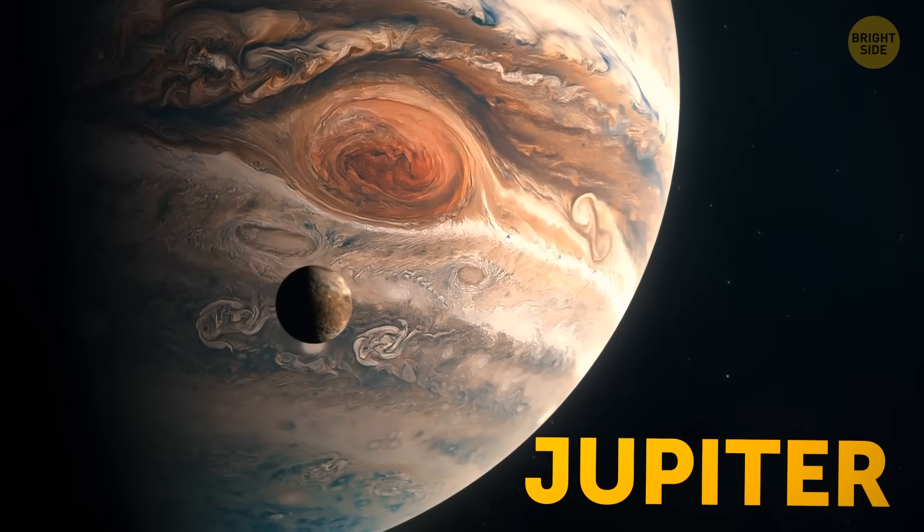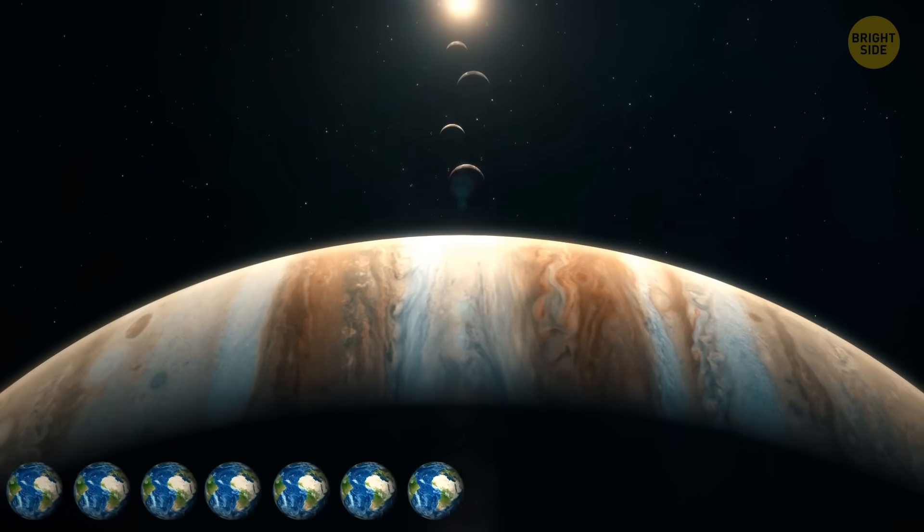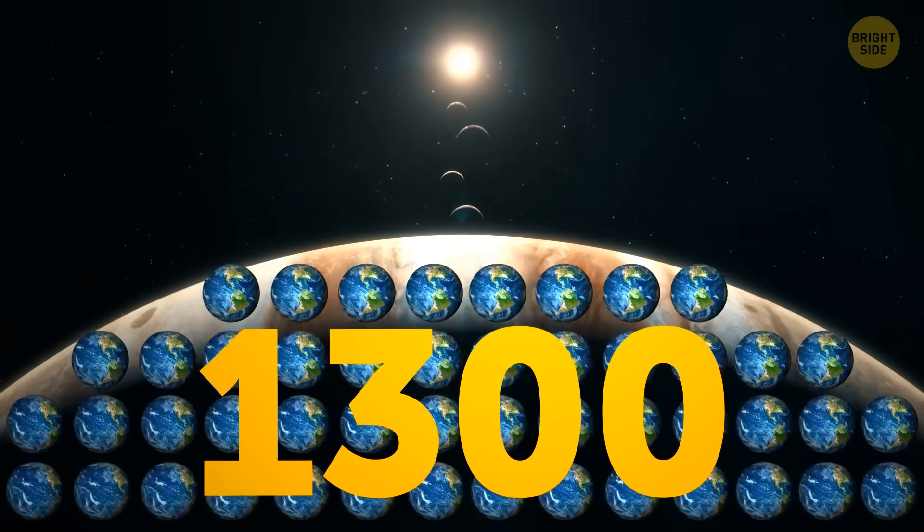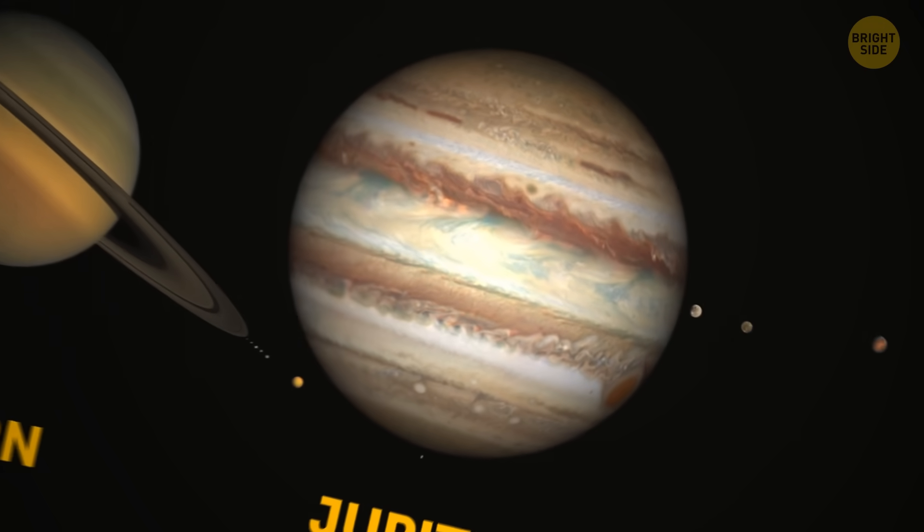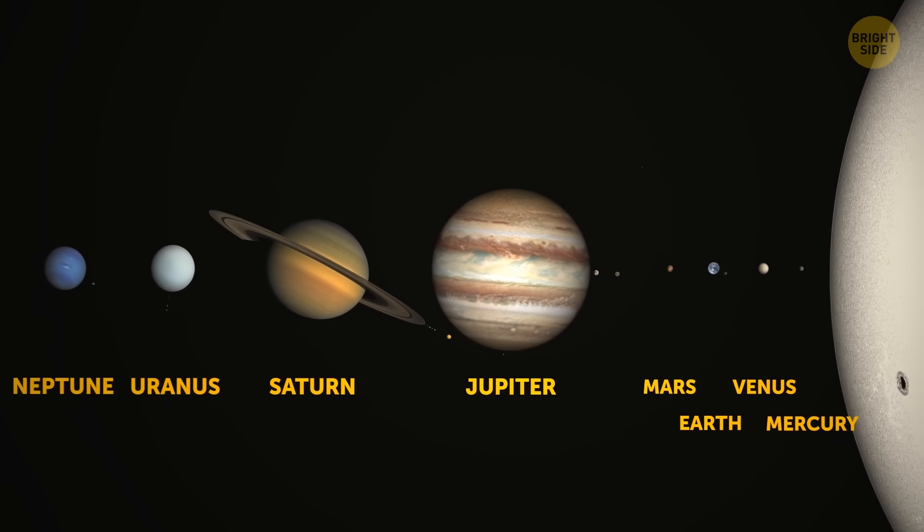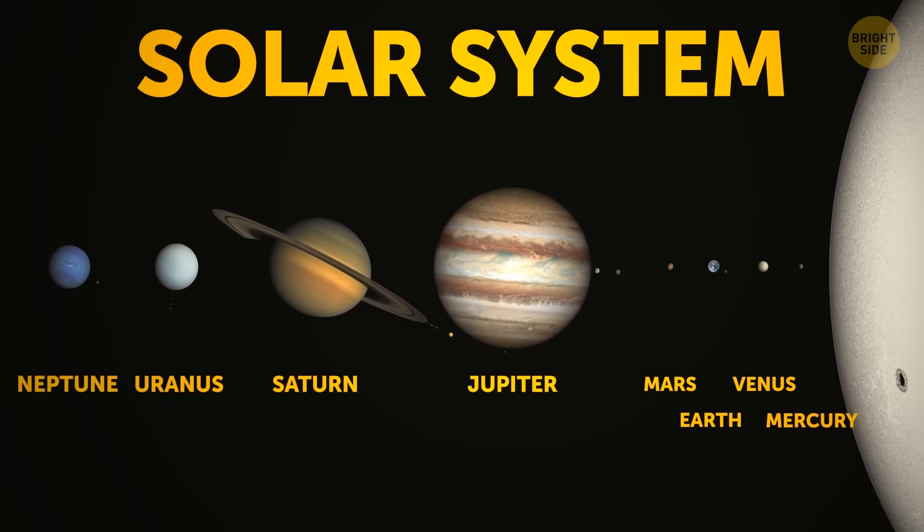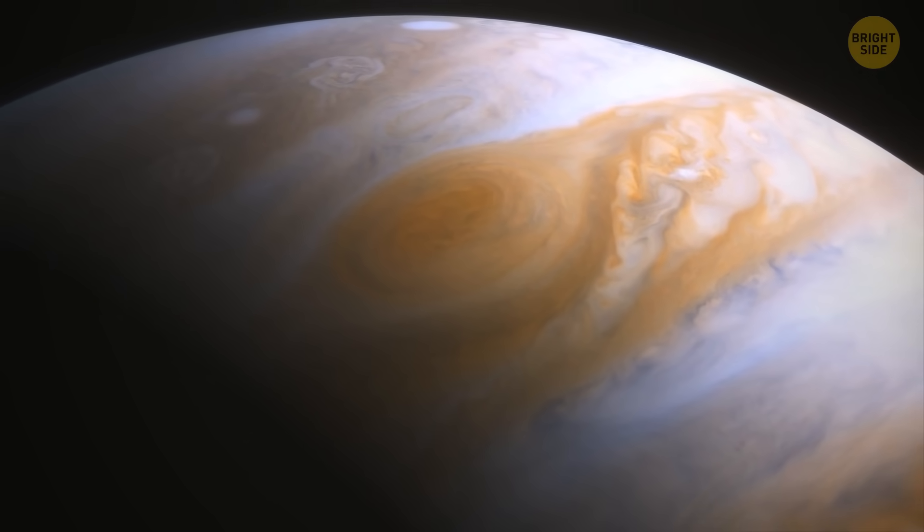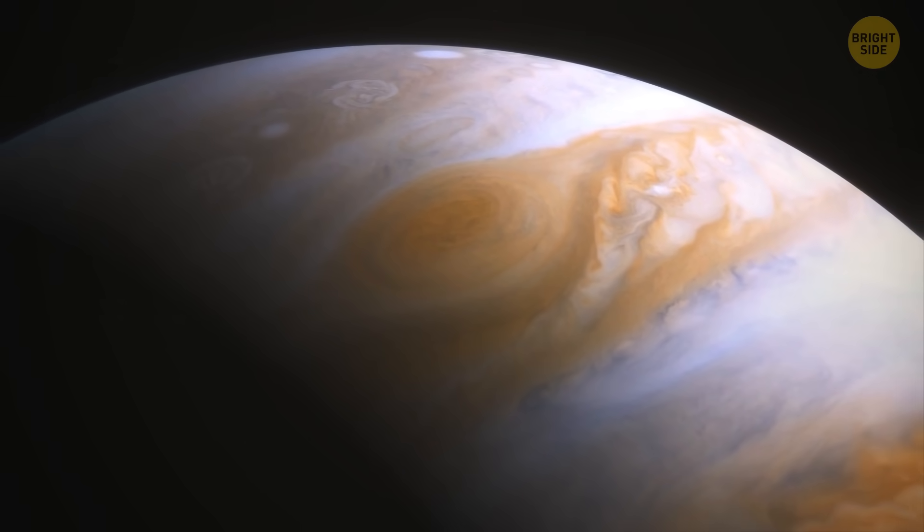Jupiter is the largest planet in the solar system. More than 1,300 Earths could fit inside this gas giant. It's also two and a half times more massive than all the other planets of the solar system combined. But if you think this is mind-boggling, I've got some great news for you.